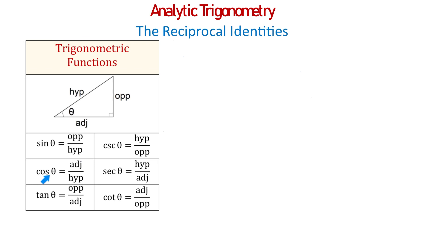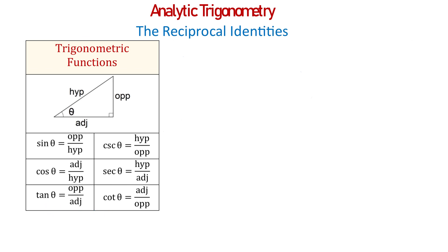The cosine function is defined as the adjacent side divided by the hypotenuse, and the secant function is defined as the hypotenuse divided by the adjacent. So we can say that these two functions are also reciprocals of each other. The tangent function is defined as the opposite divided by the adjacent, and the cotangent function is defined as the adjacent divided by the opposite. So the tangent and the cotangent are also reciprocals of each other.